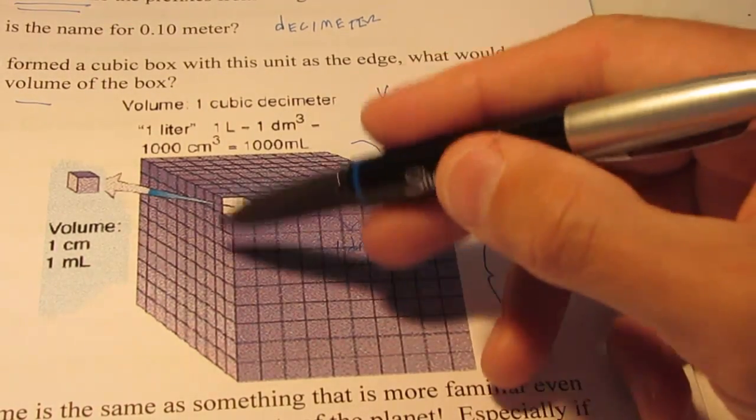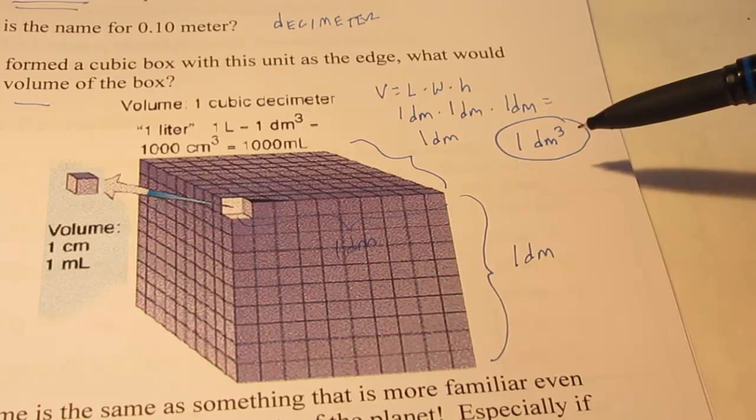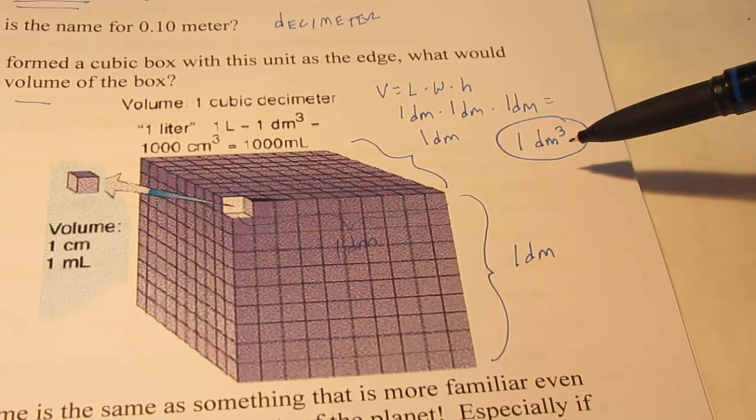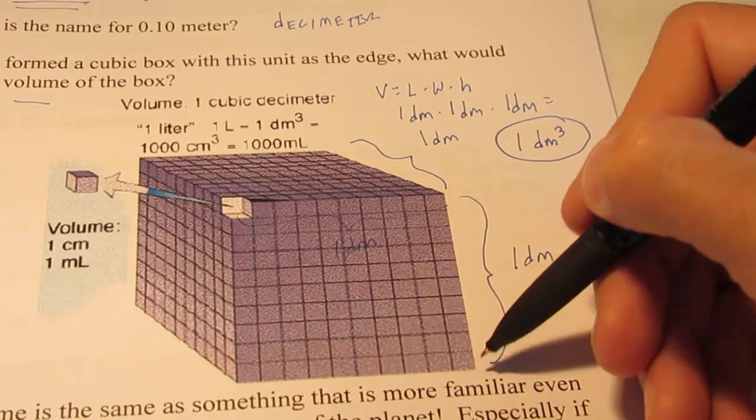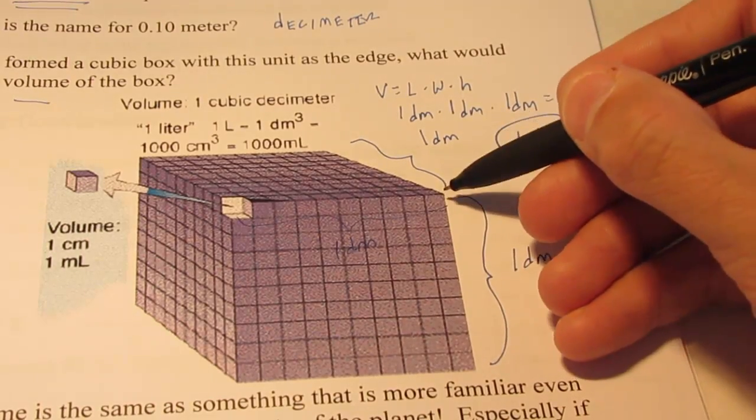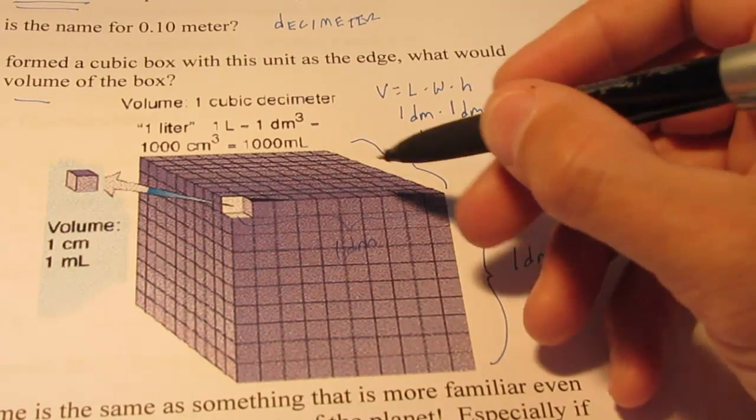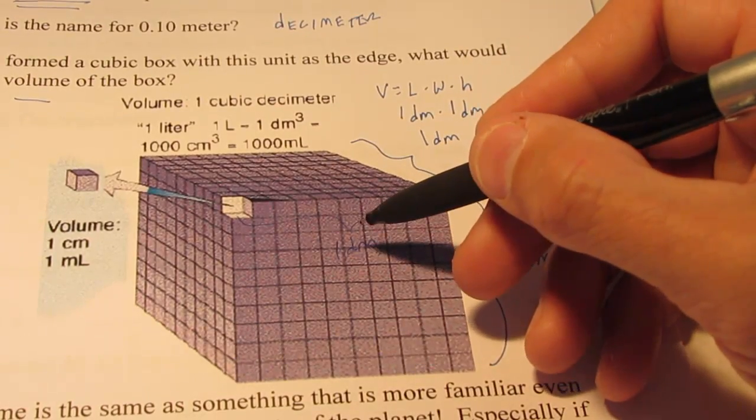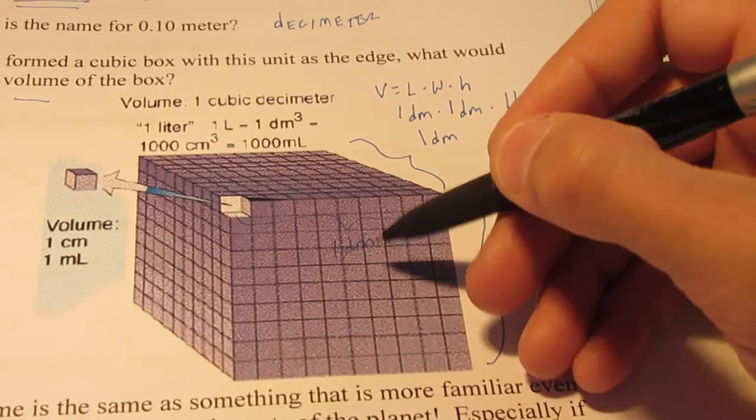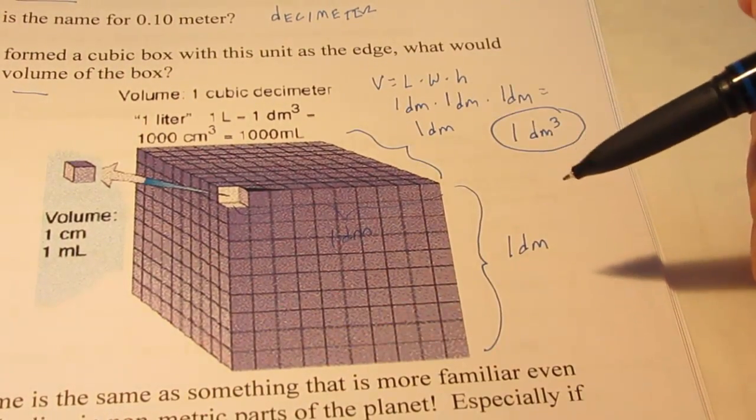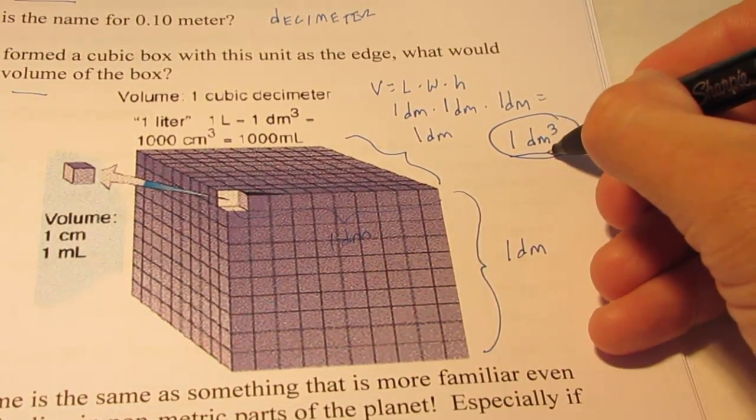So the volume of this cube would be what we would call a cubic decimeter. So once again it's a tenth of a meter tall by a tenth of a meter wide by a tenth of a meter deep. Now I actually have a cube like this in class, and I'll pull it out and show it to you so you can envision how large that really is. We call that a cubic decimeter.